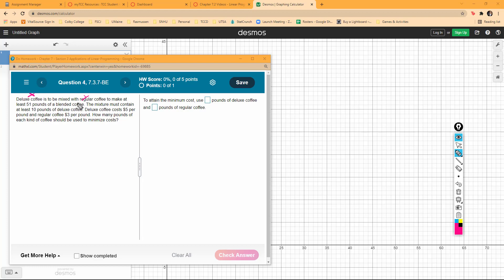I can see we're trying to minimize cost. It says we want to make at least 51 pounds of this blend.